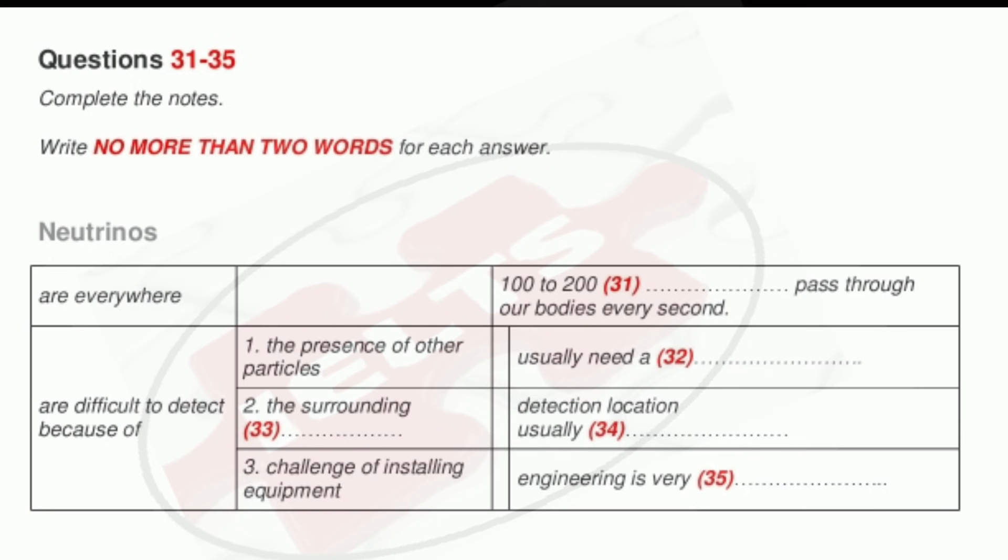Now turn to section four. Section four. You will hear a lecturer talking about an unusual atomic particle called a neutrino. First, you have some time to look at questions thirty-one to thirty-five. Now listen carefully and answer questions thirty-one to thirty-five.